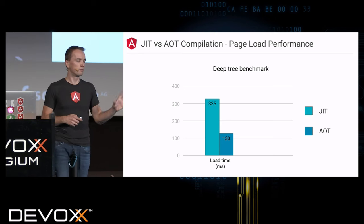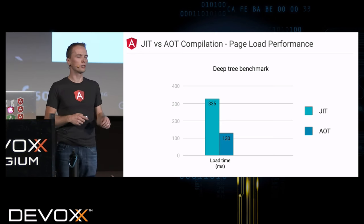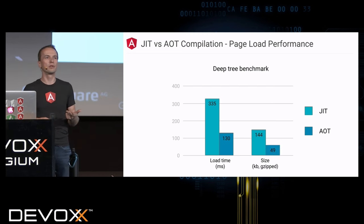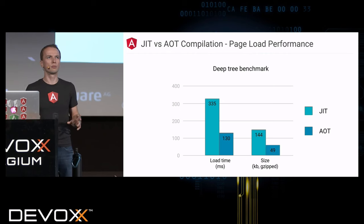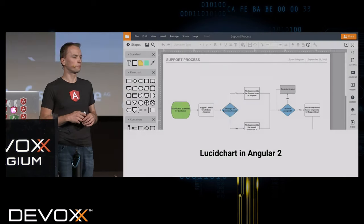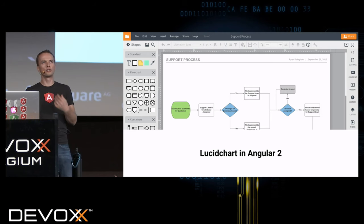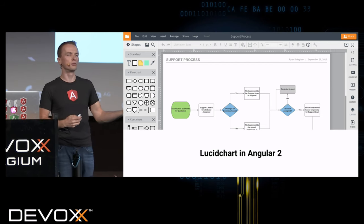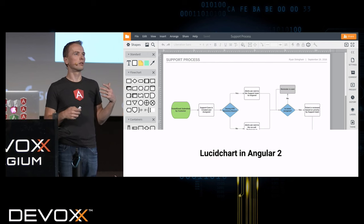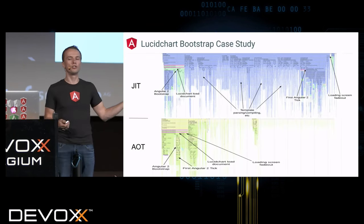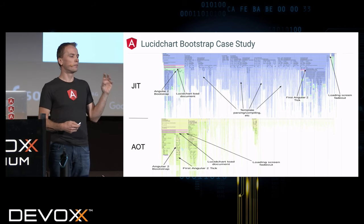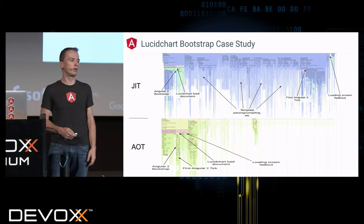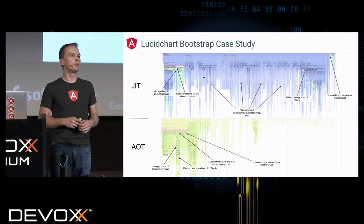In the deep tree benchmark, we see significant reduction in load time and payload size with AOT mode. We can create Hello World style applications at 49K, and with advanced optimizations down to 30K, with hopes to do better. The Lucidcharts team — who built a very rich graph and diagram application in Angular 2 — saw huge differences between JIT and AOT modes, and are now using AOT in production with major increases in user satisfaction.